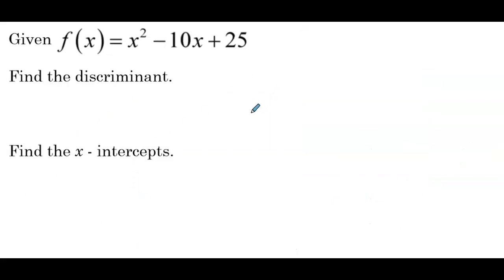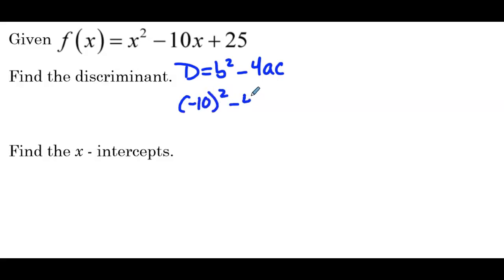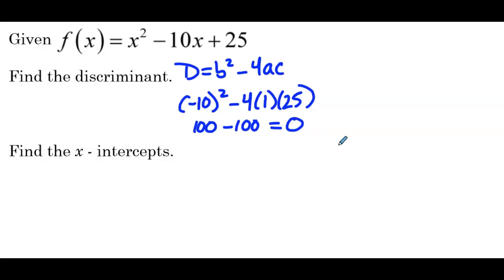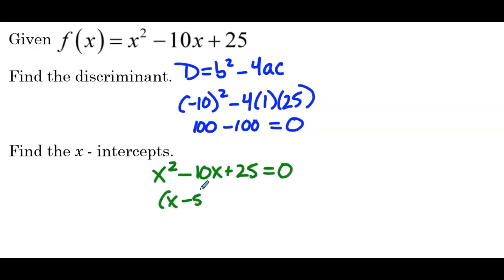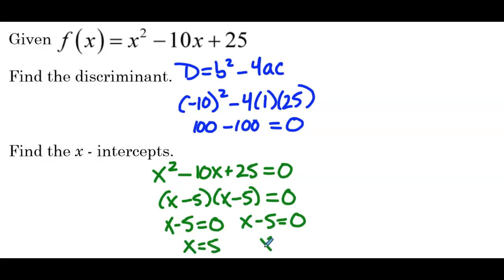Our next example: f(x) = x² − 10x + 25. Find the discriminant — that's b² − 4ac — so that's (−10)² − 4(1)(25), which is 100 − 100, which is 0. Discriminant is 0. Still a perfect square, but let's factor to see how that affects the x-intercepts. We have (x − 5)(x − 5) = 0, so x = 5 or x = 5 — really just one solution. We only have one x-intercept at (5, 0).